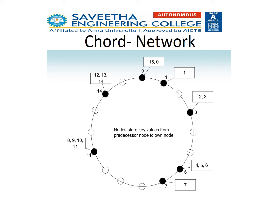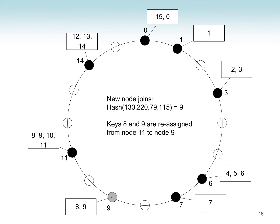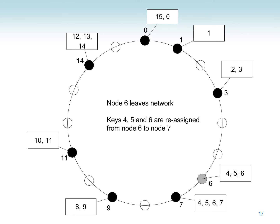Now let's see how node joining and leaving works. When node 9 is not present, node 11 holds key values 8, 9, 10, and 11. Suppose node 9 joins — then key values 8 and 9 are removed from node 11 and reassigned to node 9. Similarly, when node 6 leaves the network — node 6 was holding key values 4, 5, and 6 — these values are reassigned to the successor node 7. Now node 7 holds key values 4, 5, 6, and 7.